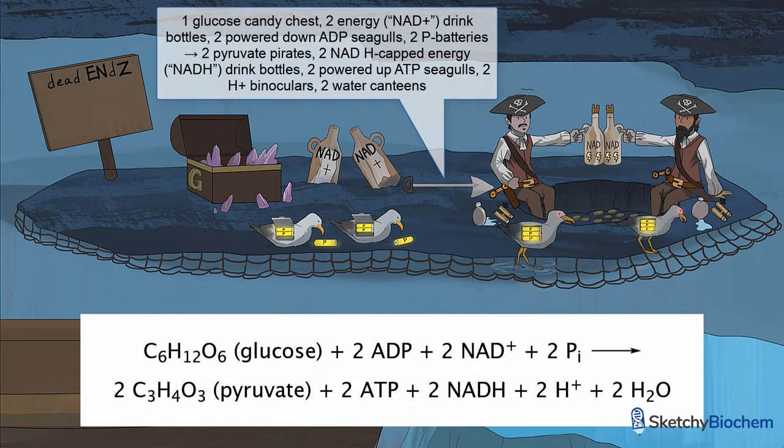To the left of that suspiciously arrow-shaped shovel, you'll see one glucose candy treasure chest, two powered-down ADP robo-seagulls, and two empty NAD+ bottles. To the right of the shovel arrow are two pyruvate pirates, two ATP-powered robo-seagulls, two full NADH energy drinks, two water canteens, and two H+ binoculars.